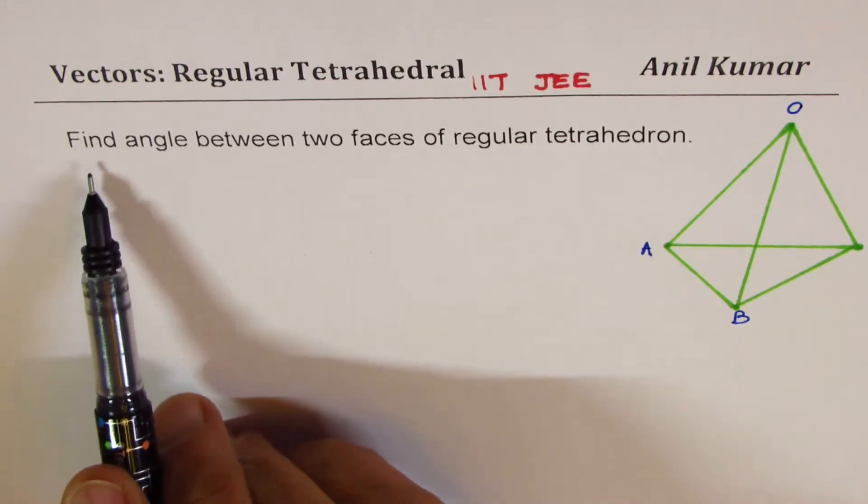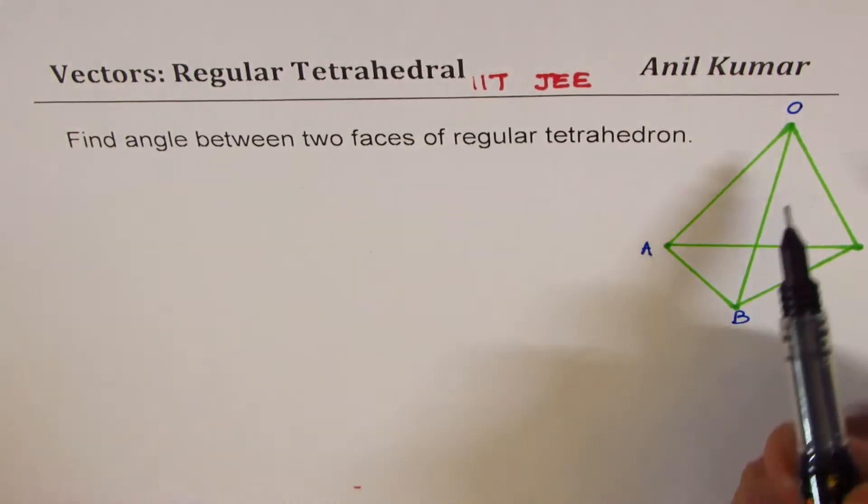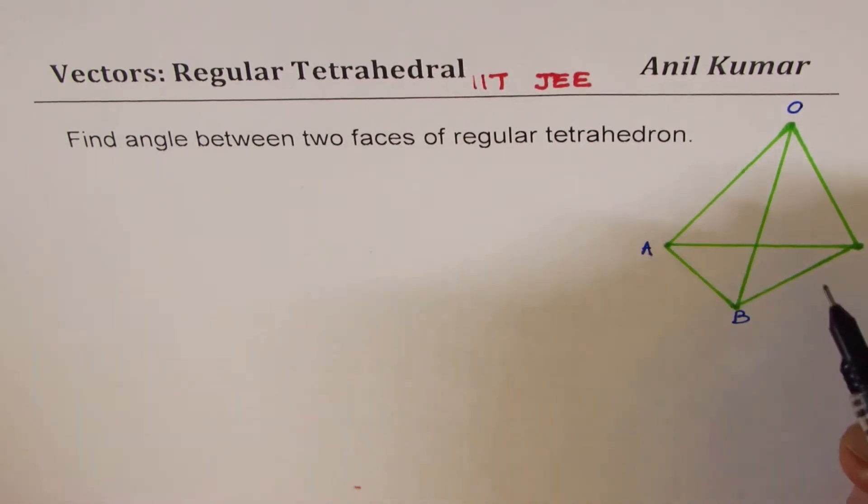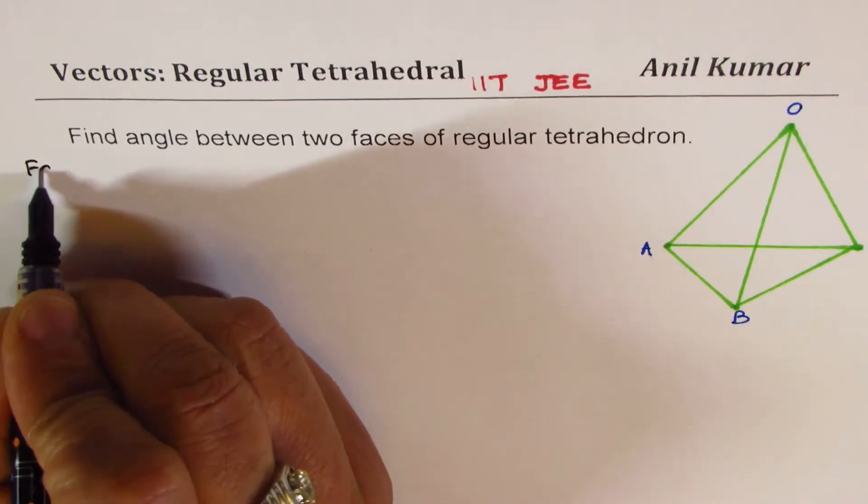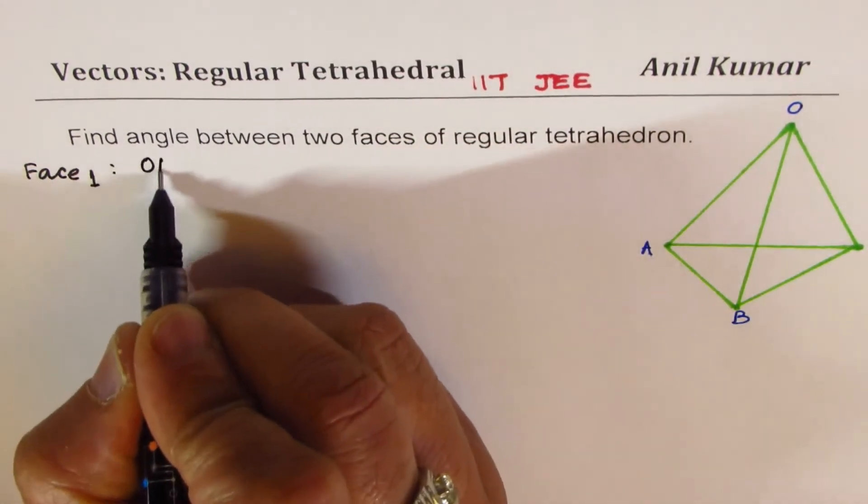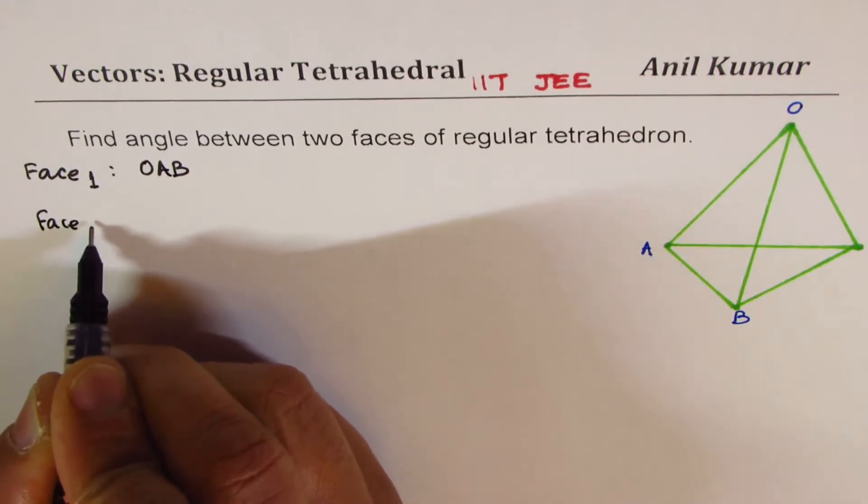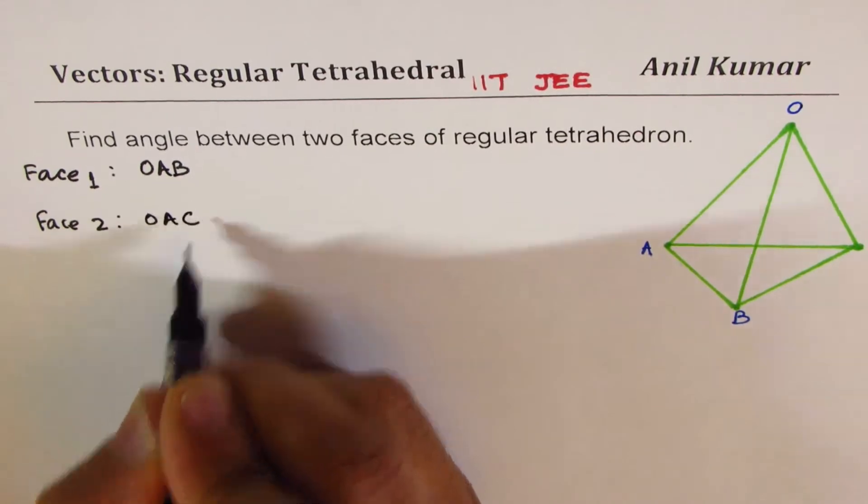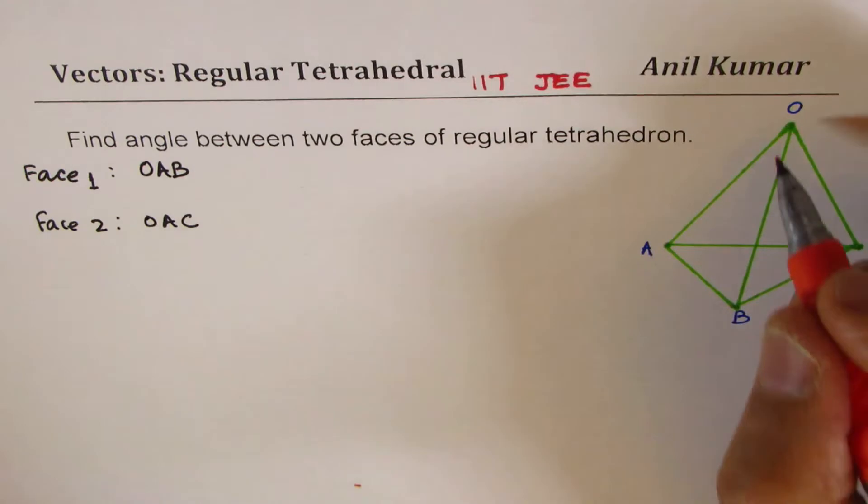The question here is find angle between two faces of regular tetrahedron. So here is a tetrahedron, OABC. We need to find angle between two faces. So let me take two faces as face 1 as OAB, and face 2 as OAC. Now let me highlight these faces and then we'll continue solving the question.